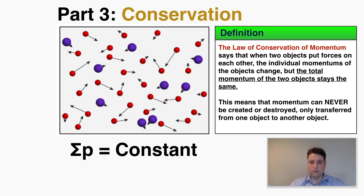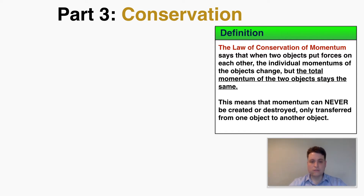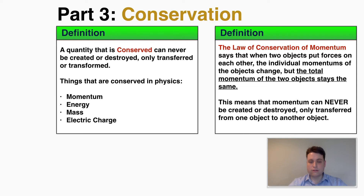Using this idea that the total stays the same, we can predict a lot of new information about objects interacting with each other. In general, a quantity that is conserved can never be created or destroyed, only transferred or transformed into another type of that same quantity. There are a few things conserved in physics — momentum, energy, mass, and electric charge are all conserved, so none of these can ever be created or destroyed, only transferred or transformed.